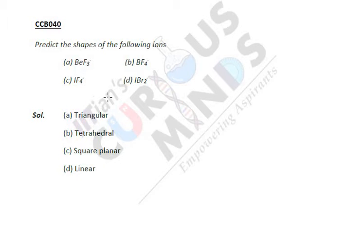Hello everyone. Let's see our next example of chemical bonding. We are talking about predicting the shape of the following ions. There are four examples for us to tell the shapes. First, let's give the structures.